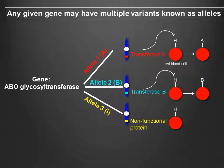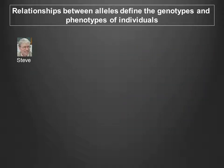In Mendelian genetics, a common practice is to denote alleles of genes with letters. The use of different letters to denote the alleles of a gene is a shorthand representation of the fact that each allele is functionally different at the molecular level. An individual's genetic makeup, or genotype, manifests as an observable trait or phenotype.